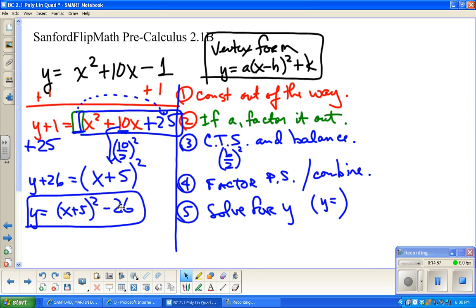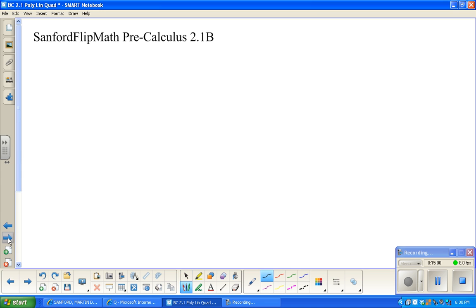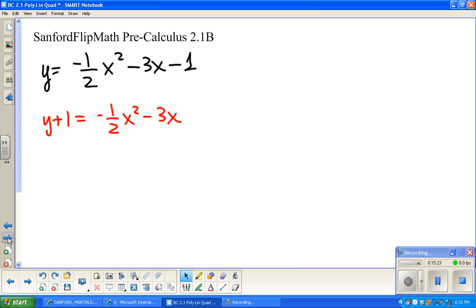I want to do one more, just the same kind of thing, it's just a little more exciting. You're going to love this. By love this, I mean you are not going to love this. Here we go. First step, get 1 out of the way. Next step, if there is an a, factor it out. So it's still y + 1 equals negative 1 half, and then on the inside I'm going to have x squared.